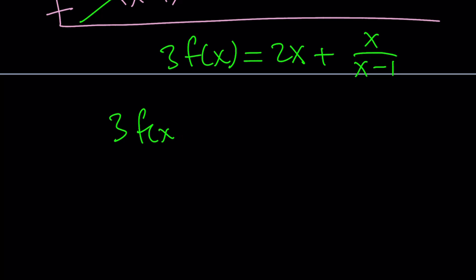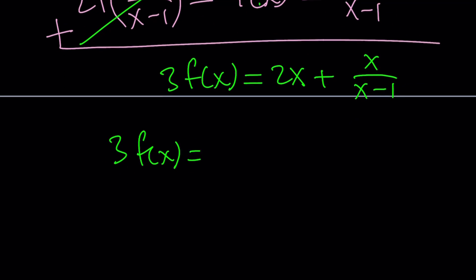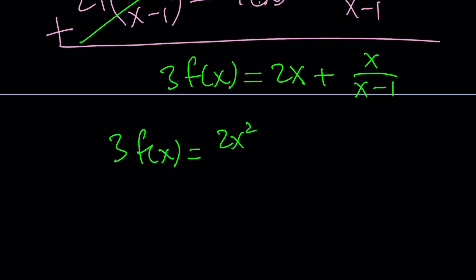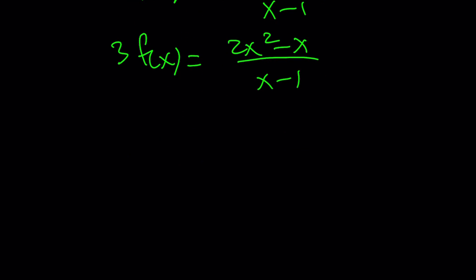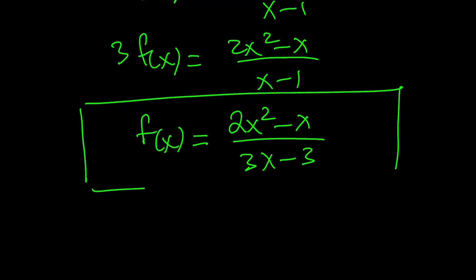Let's go ahead and simplify this. 3 times f of x equals, if you make a common denominator, you get 2x squared minus 2x plus x over x minus 1. And then if you simplify the numerator, you get 2x squared minus x over x minus 1. And then finally, multiplying both sides by 1 third or dividing by 3, we get 2x squared minus x divided by 3x minus 3. And that would be the expression for f.